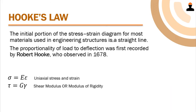In our previous discussion, we talked about the relationship between stress and strain through the stress-strain diagram. We found that on the stress-strain diagram, we have the elastic region or linear region, which is what most materials used in engineering design are based on. This proportionality of stress and strain was first recorded by Robert Hooke in 1678, who gave the formula: stress is equal to the modulus of elasticity E times the strain, where E is the slope of the linear region.